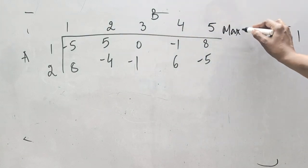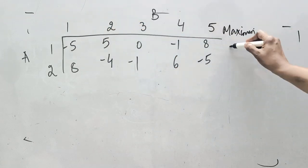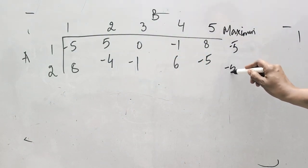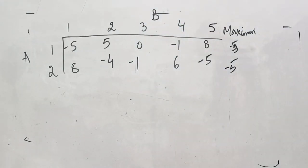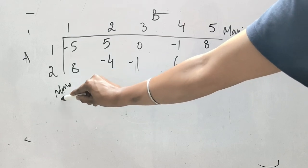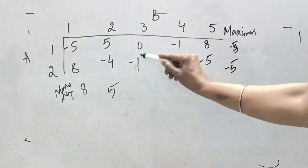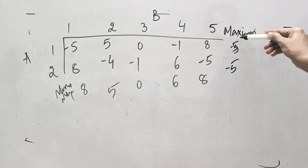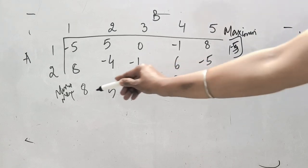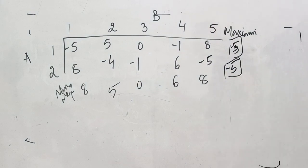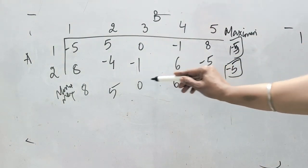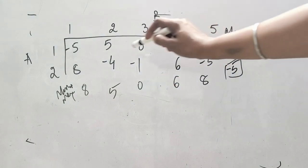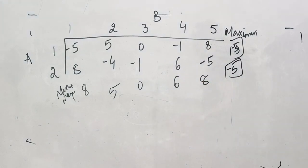Calculating the row minima: the minimum element in each row is minus five and minus five. Column-wise, we calculate the minimax by taking the maximum of each column: eight, five, zero, six, and eight. Out of these column maxima, the minimum is zero. Since maximin (−5) is not equal to minimax (0), the game cannot be solved with pure strategies, so players will adopt mixed strategies.